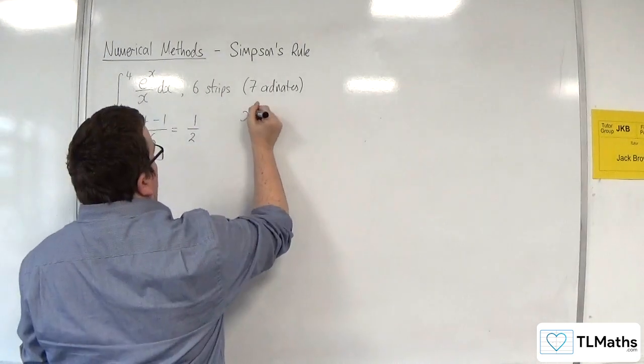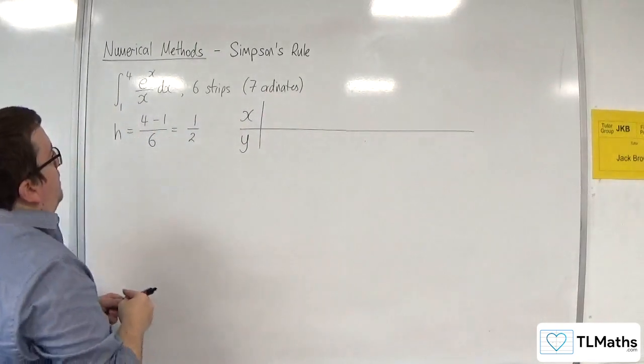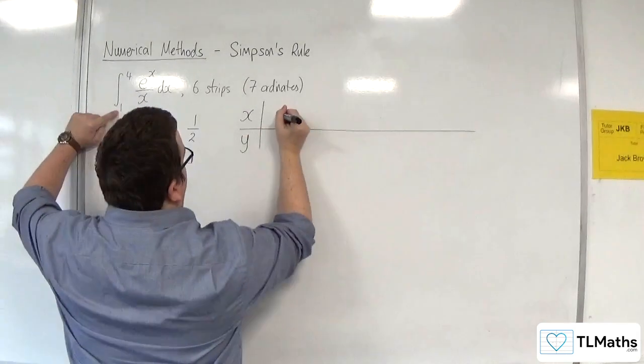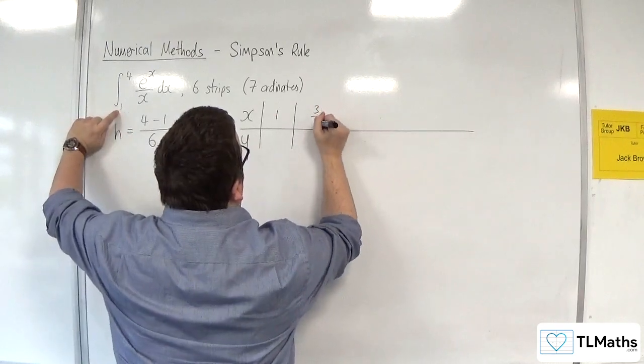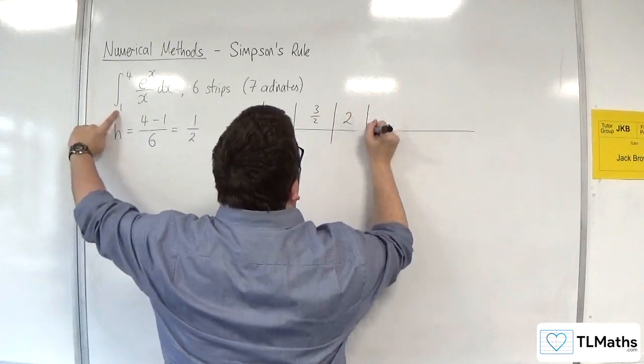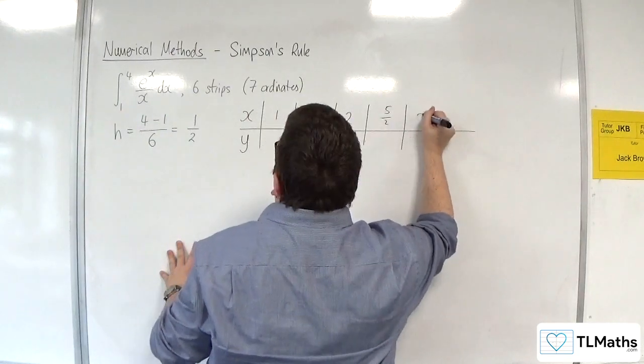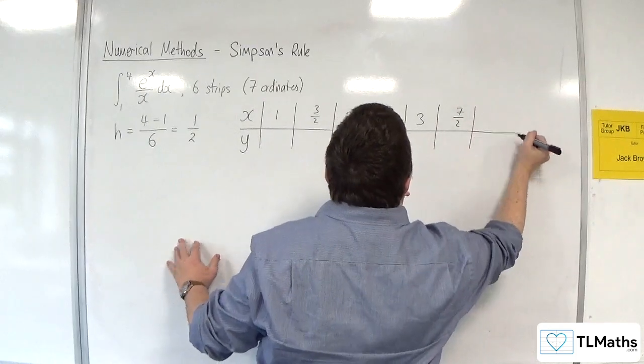I'm then going to build up a table of results. So the x's are going to start at 1, and they're going to go up in halves. So we'll have 3 halves, then 2, then we're going to have 5 halves, then 3, then 7 halves, and then 4.